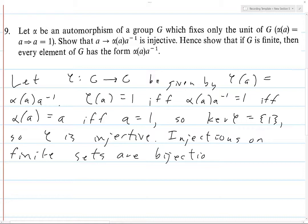And so if the order of G is finite, then phi of G, i.e. the image under phi, is all of G. And so that means precisely that every element of G can be written in the form alpha of a times a inverse. And so there we go. This completes our proof.